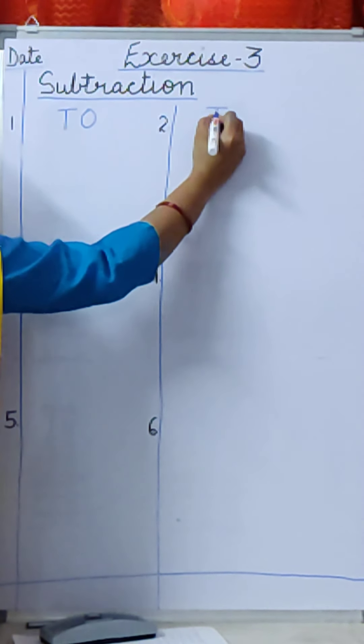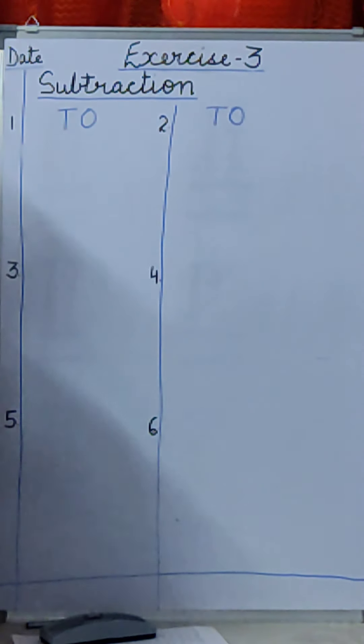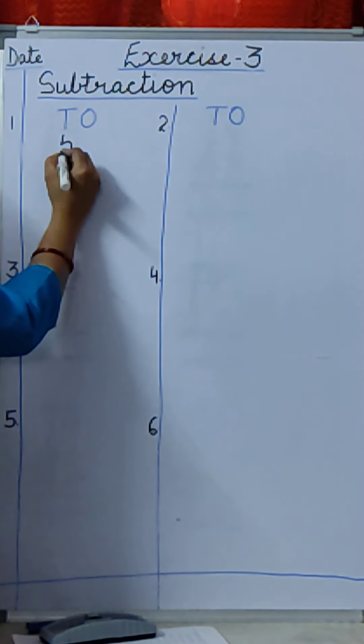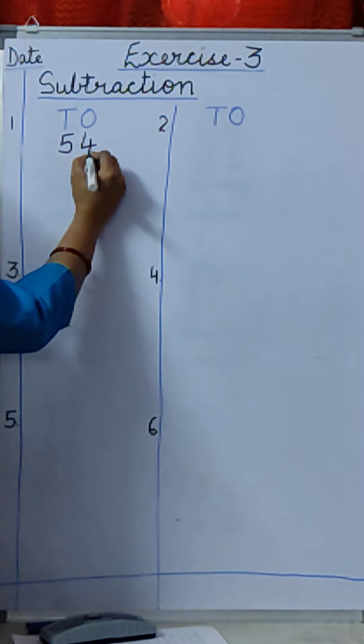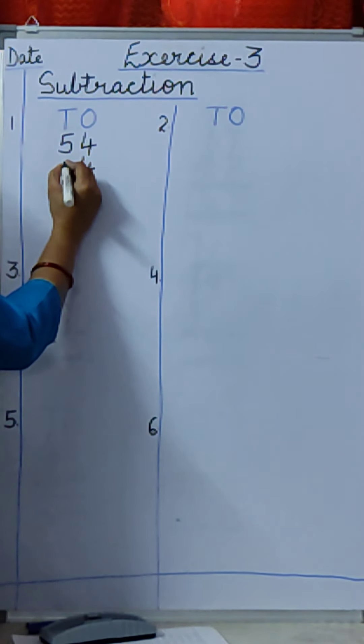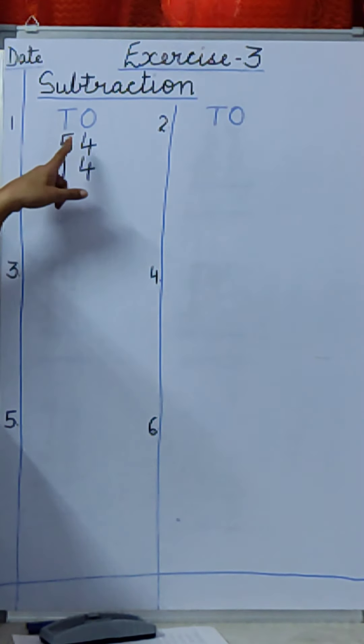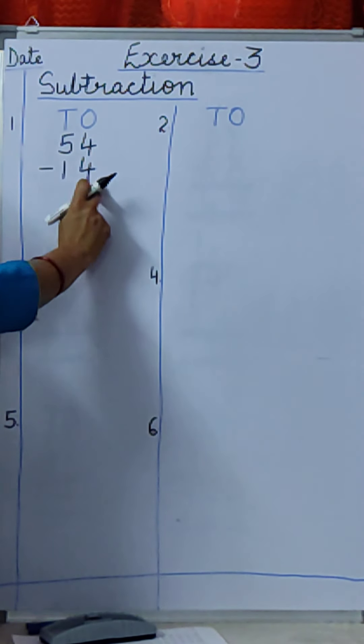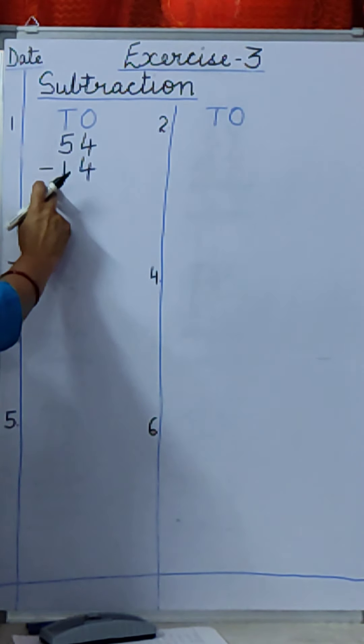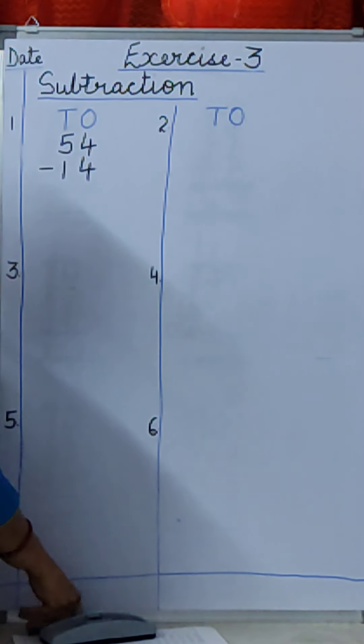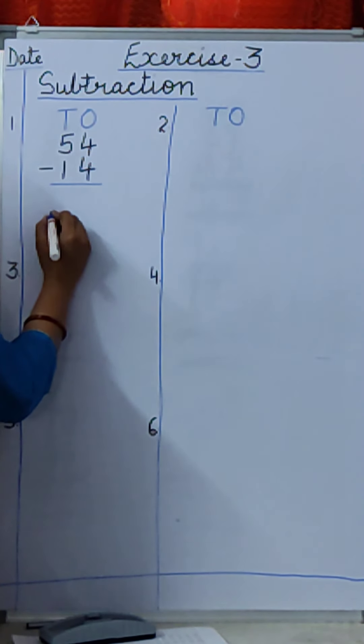T.O. You know what T.O. stands for? Tens and Ones. T.O. So first one is 54 minus 14. So first we will subtract 4 minus 4. Then we will subtract 5 minus 1. And then we will draw a line with the blue pencils.